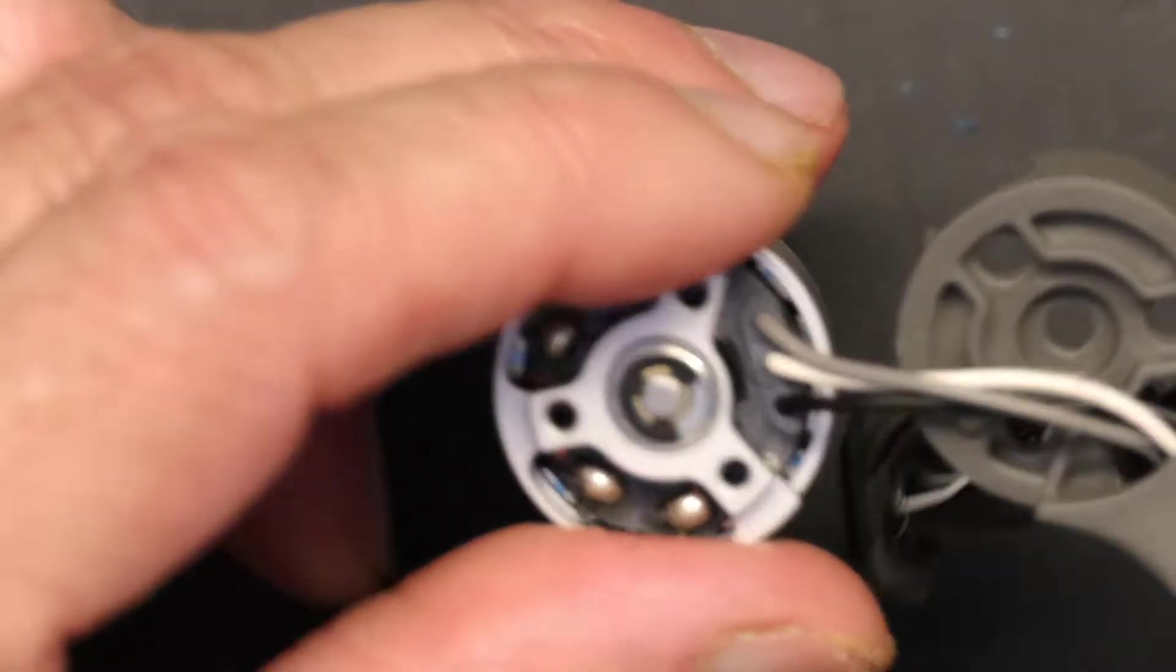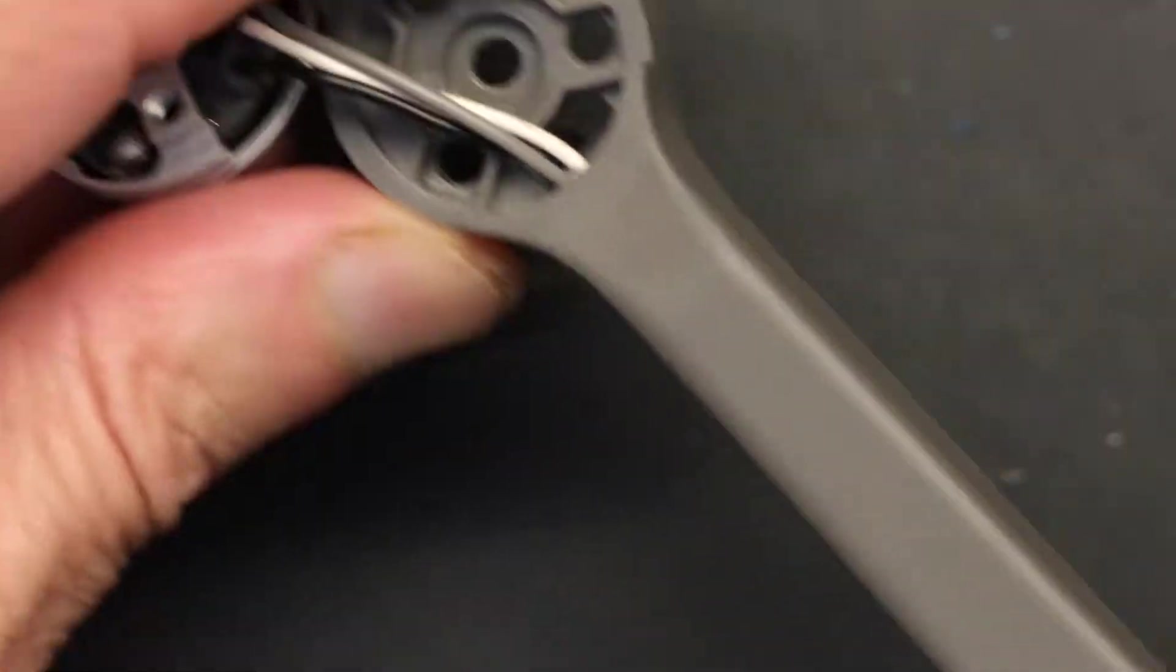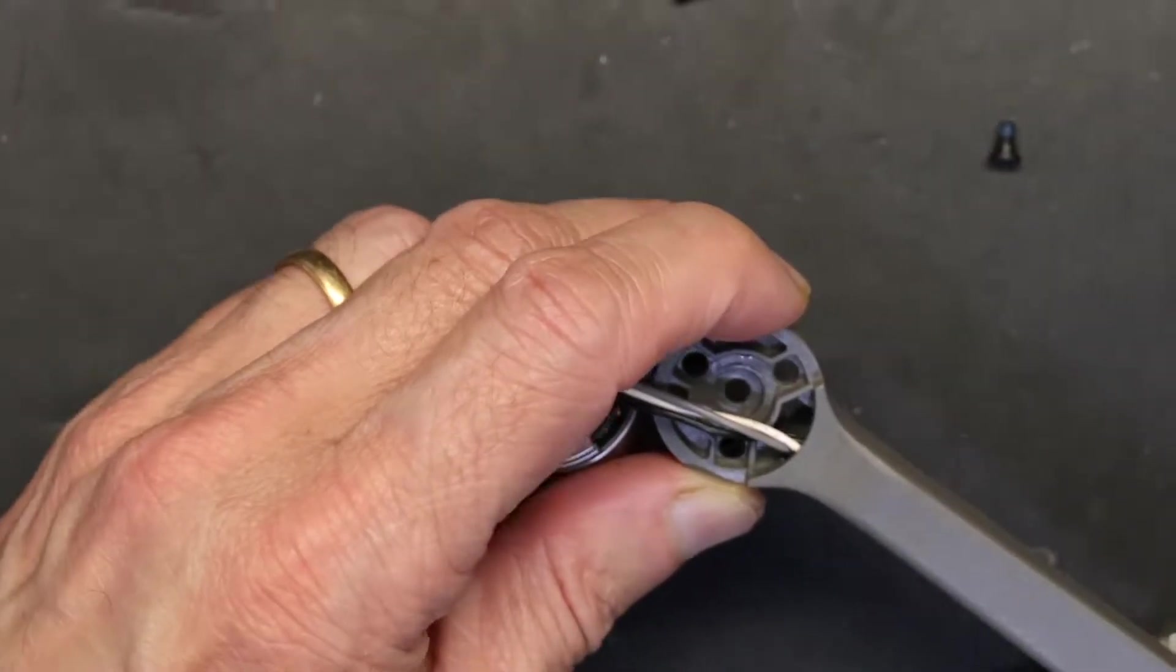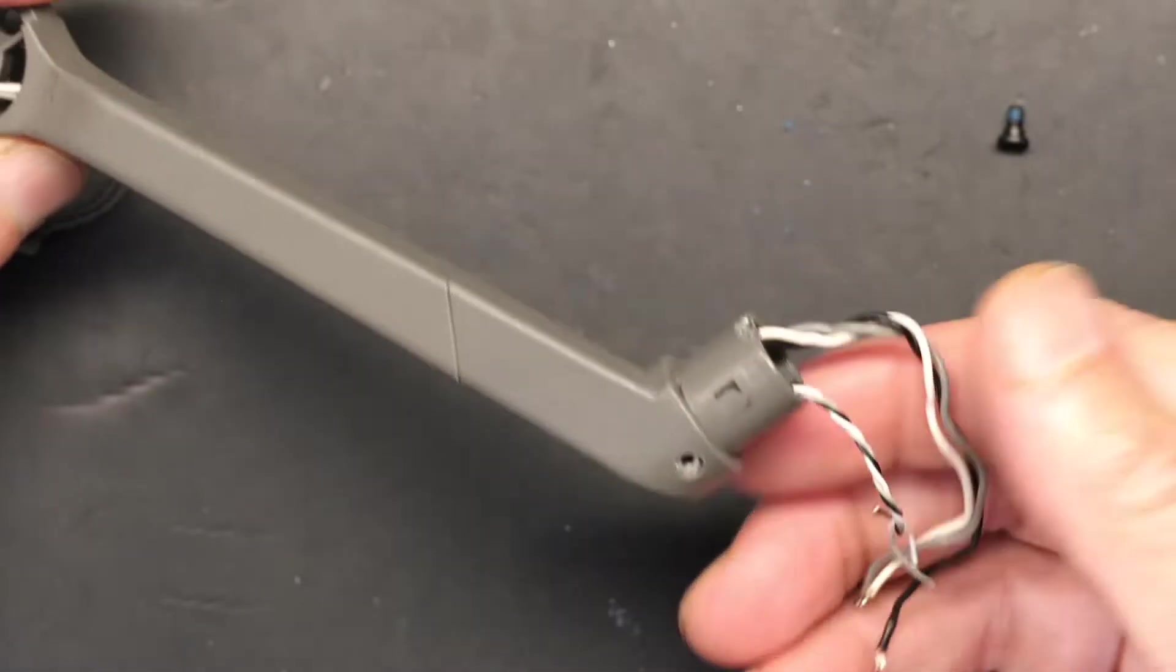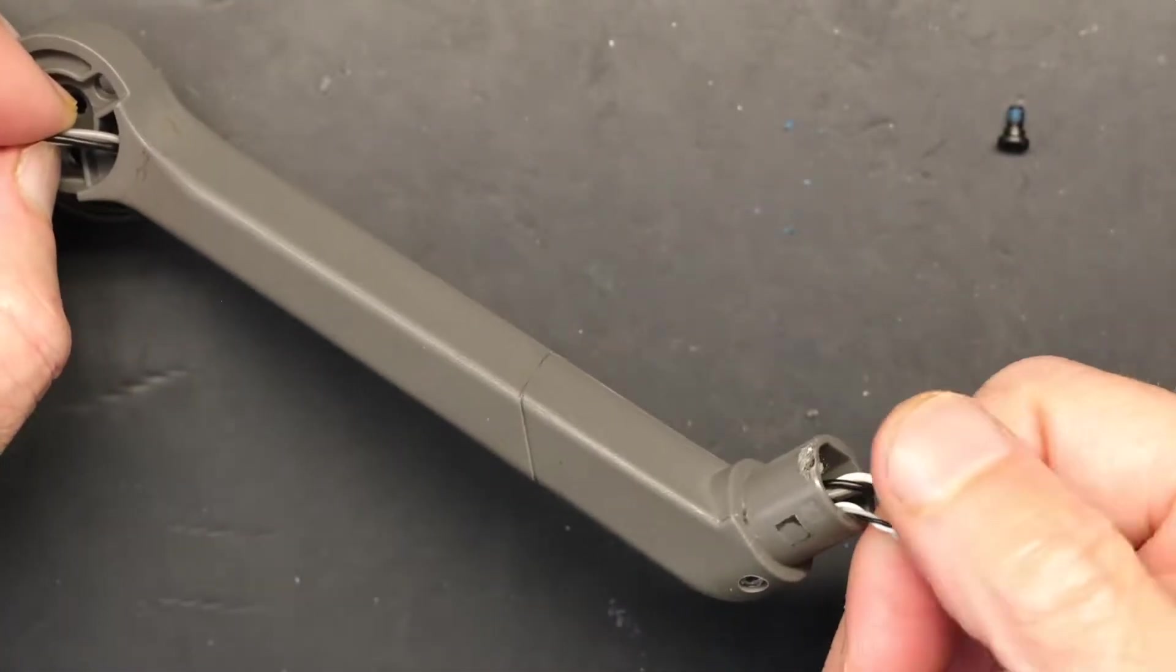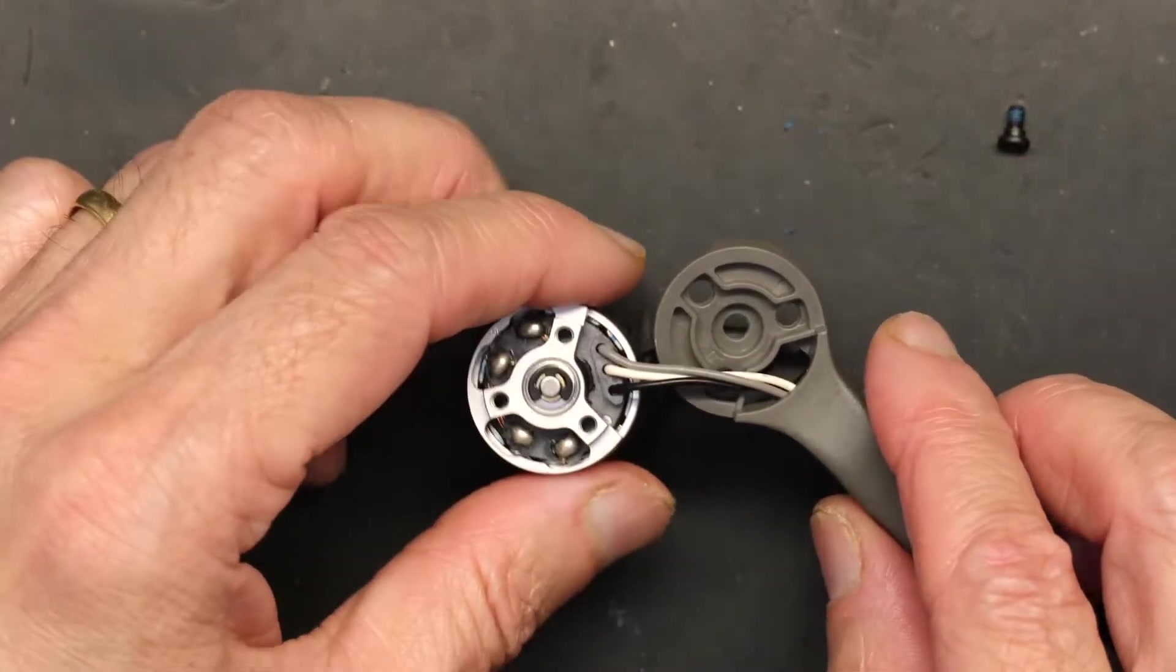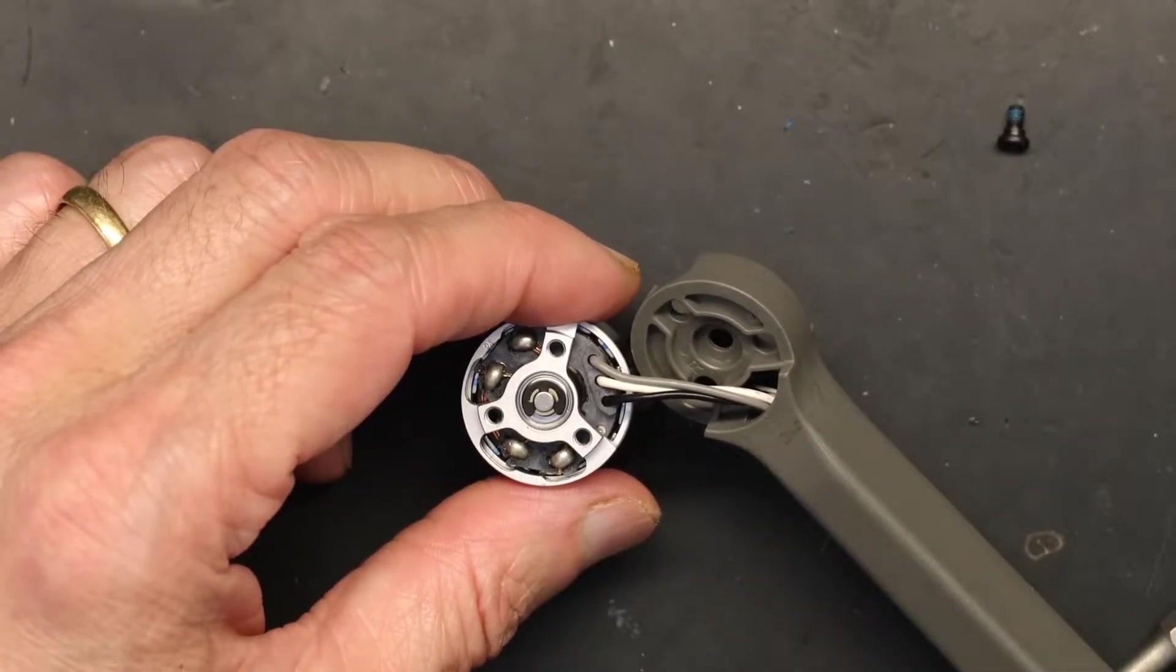Instead, this is what I recommend: cutting it just about here. Not too much because you're not going to have too much room to pull this. The reason you won't have too much room is because the other end is soldered inside so it doesn't give in. The cable doesn't come out so that's why you barely have a little bit of room.